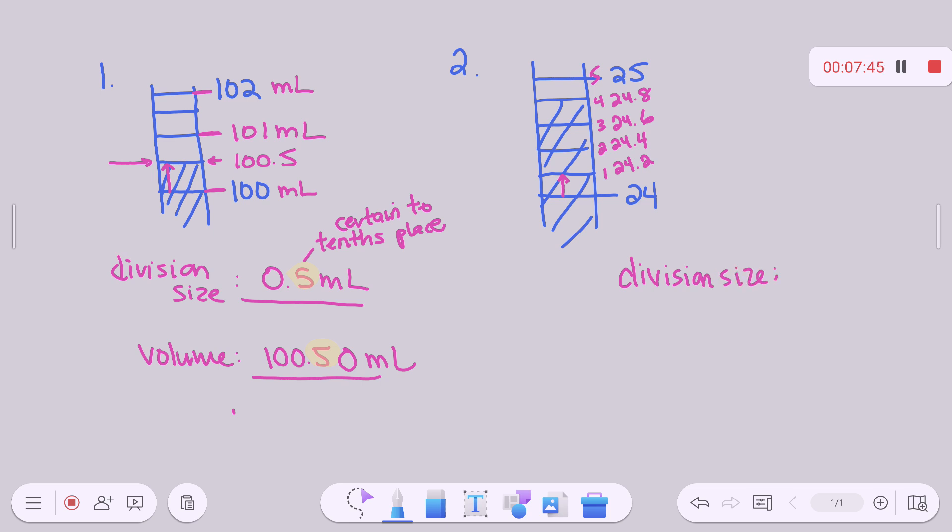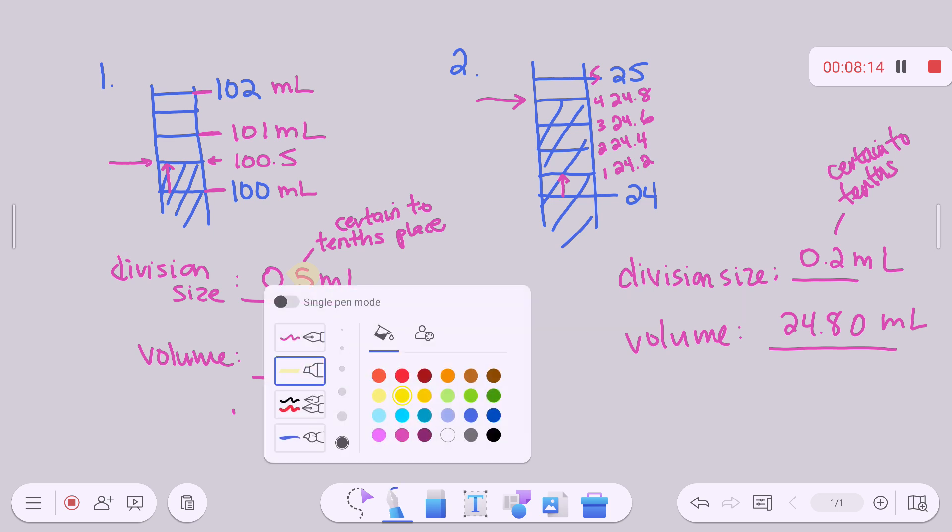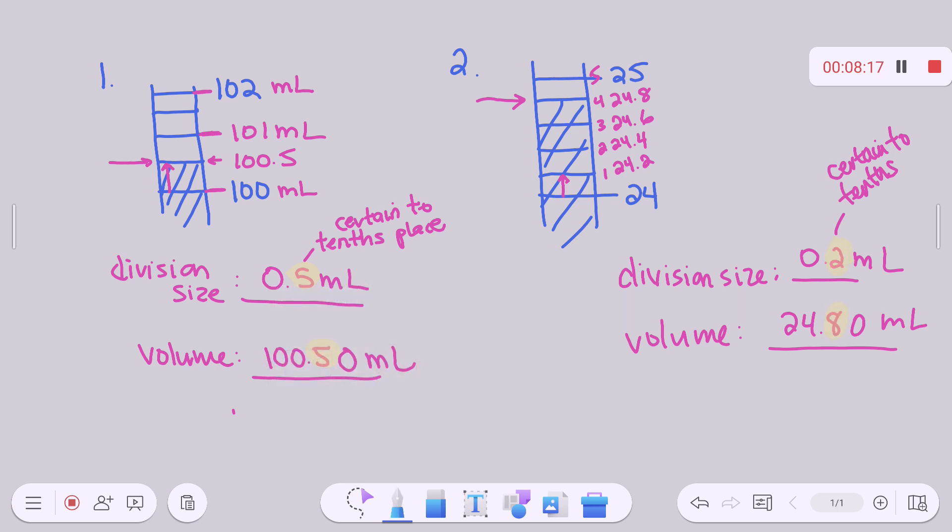Okay. So what's my division size? 0.2. I'm certain up to what decimal place? Tenths. All right. I go up to 24.8 with my volume, right? The shading that's on that. So my volume would be 24.8. What should I put after the eight? A zero. Exactly. That's my estimated digit. We were certain to the tenths place. We had to provide one digit after that. All right. Do you want to try a couple on your own?